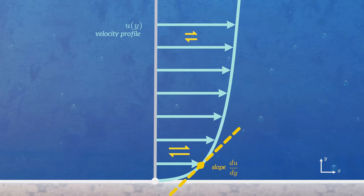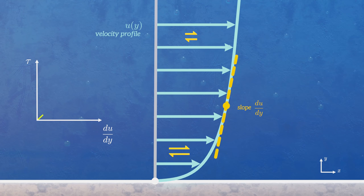For most fluids, the relationship between the shear stress and the slope of the velocity profile is linear, and the constant of proportionality is what we call fluid viscosity. In engineering, it's usually denoted using the Greek letter mu.